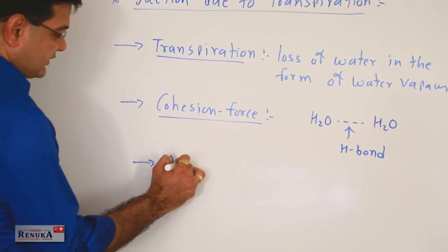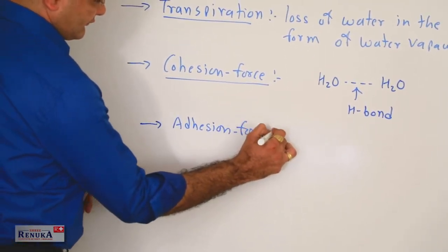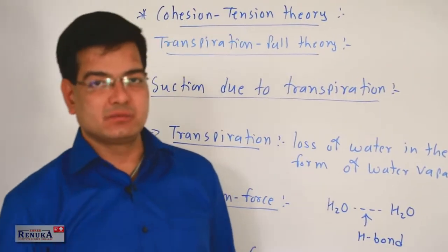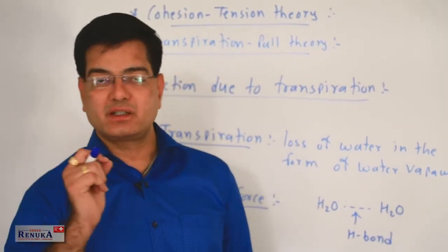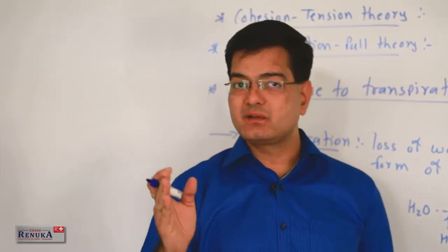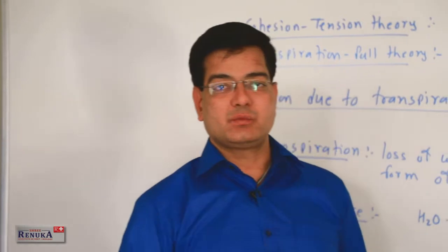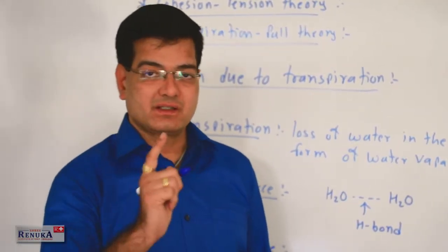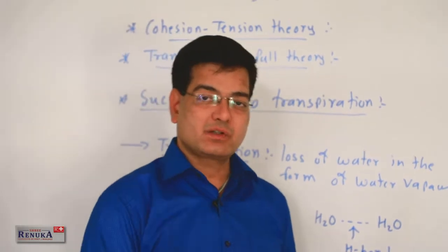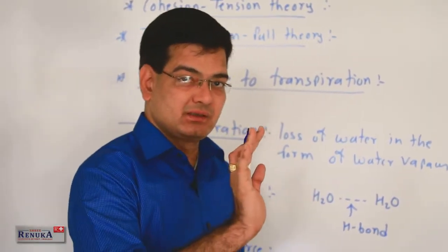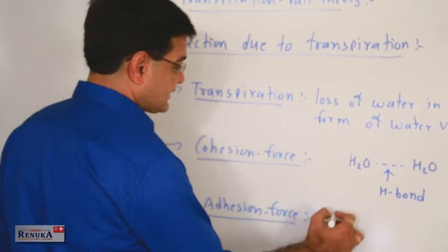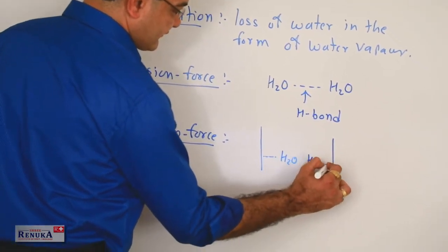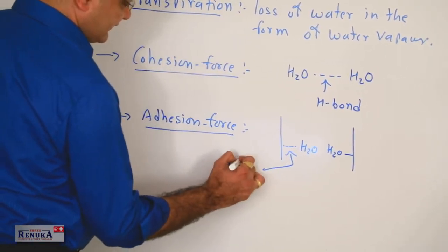Adhesion force is also responsible. The movement of water occurs through the xylem, whose wall is formed of cellulose with lignin deposited on it. This lignin-cellulose wall always remains associated with water molecules. The force of attraction between the wall of the xylem and the water molecules is called adhesion force, causing water molecules to adhere to the xylem wall.